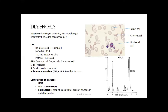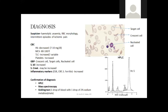The basic investigations we are going to order — in CBC, the hemoglobin is going to decrease. But these patients usually do not have severe anemia; they are going to have mild to moderate anemia. The hemoglobin may range from 7 to 10 g per deciliter. MCV will be normal.